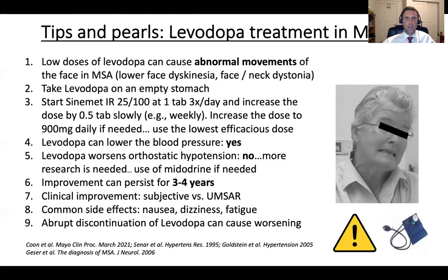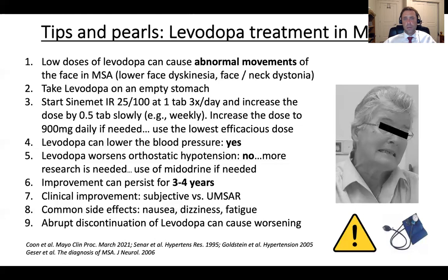Levodopa can decrease blood pressure, so clinicians must monitor blood pressure when initiating or increasing levodopa in MSA patients. It is unclear whether carbidopa/levodopa actually worsens orthostatic hypotension or the amplitude of blood pressure drop from supine to standing — future research should address this. If needed, we can prescribe medications to raise blood pressure such as midodrine. Improvement with carbidopa/levodopa can last three to four years and sometimes much longer in some patients.